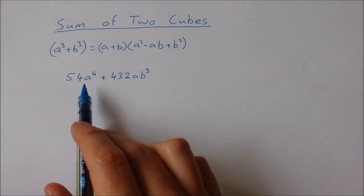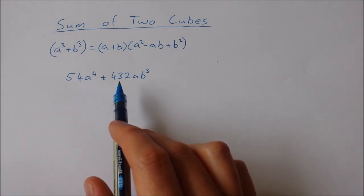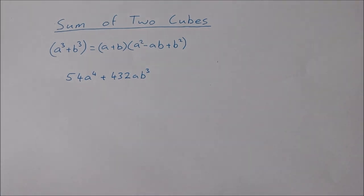Now when you look at this first, it doesn't really look like a sum of two cubes question, but we can factorize out a highest common factor of 54a.